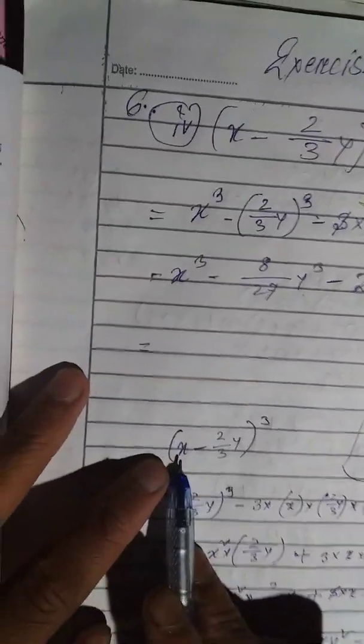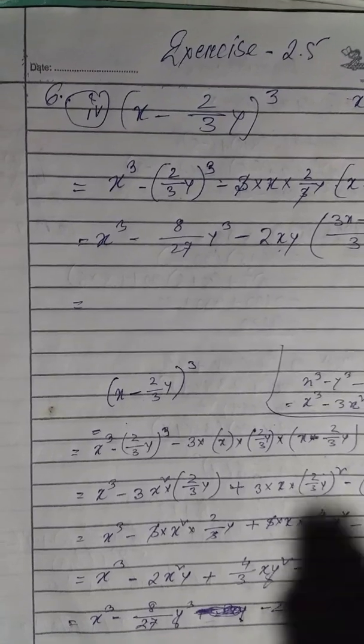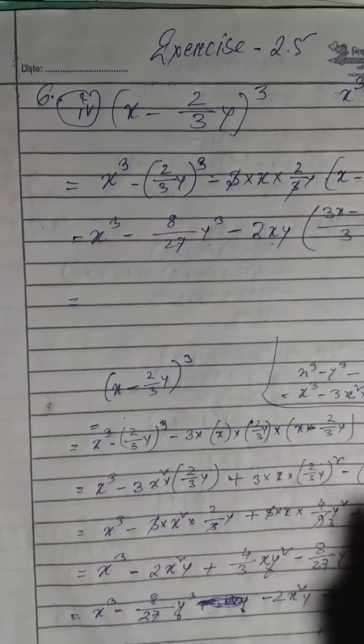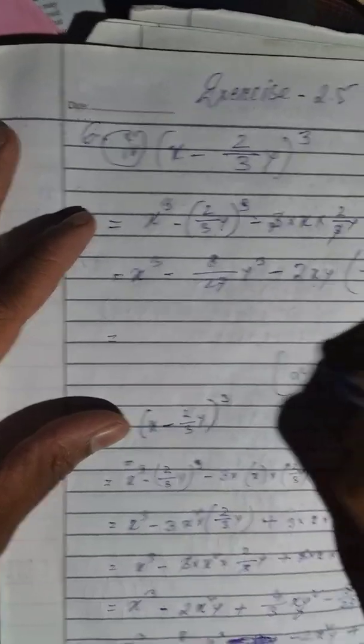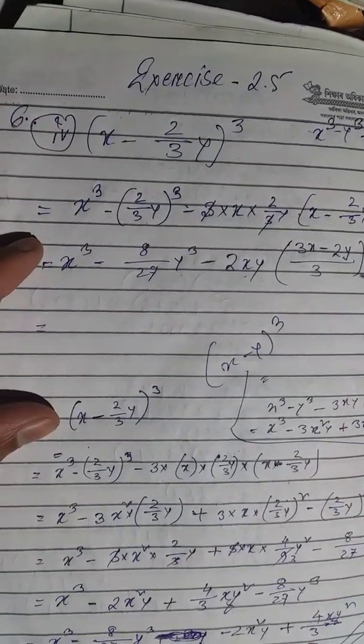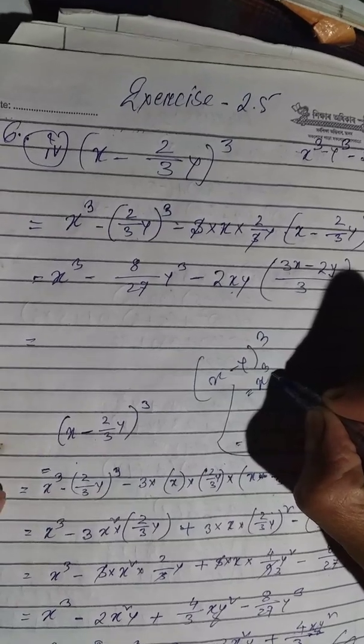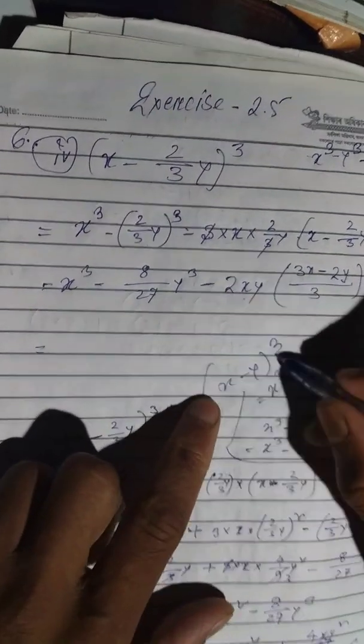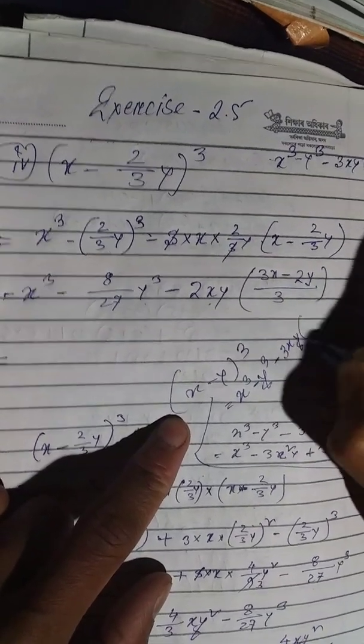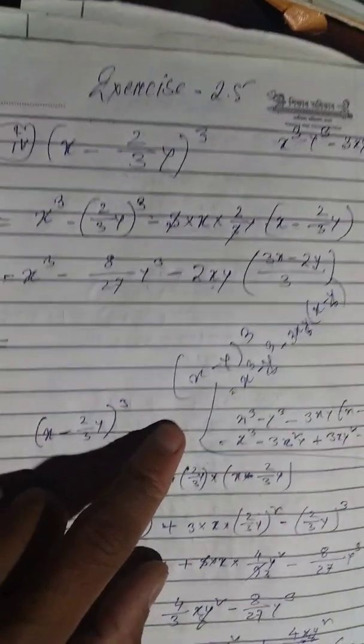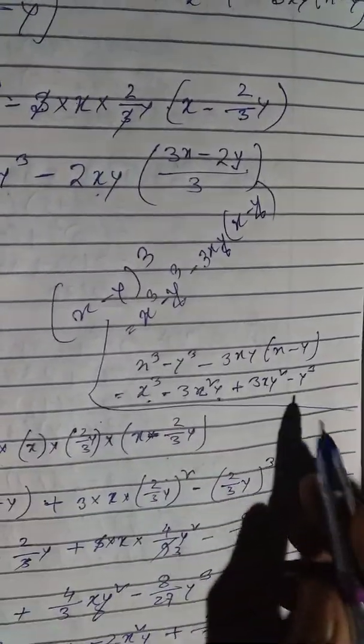X minus 2 by 3 Y whole cube. Using the formula A minus B whole cube equals A³ minus 3A²B plus 3AB² minus B³. X minus Y whole cube plus 3XY square minus Y cube.